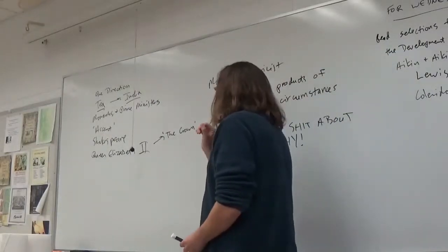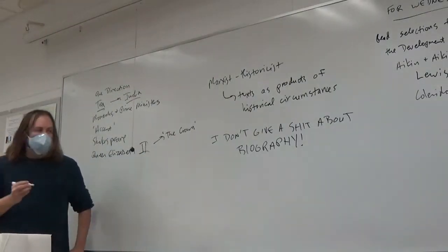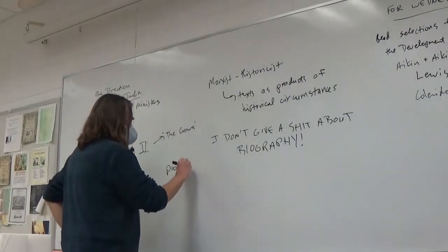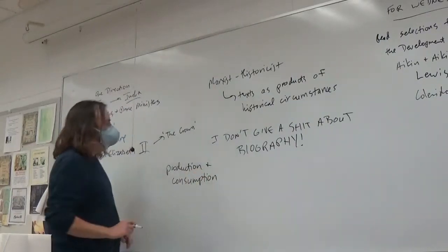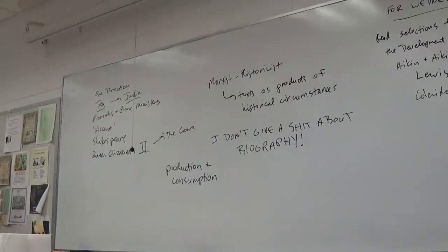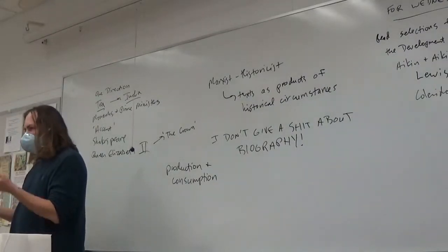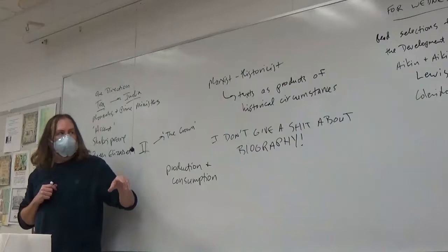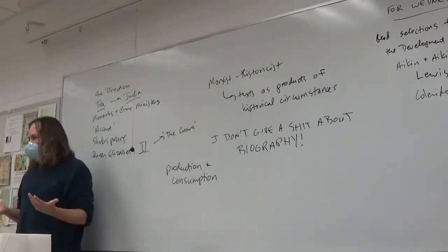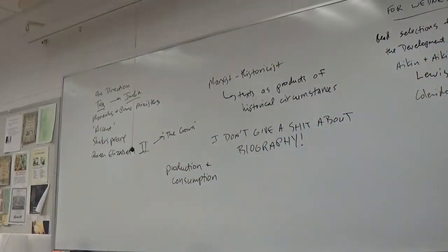We're also going to be talking about audience and about the production and consumption of texts. In what form are texts being circulated? How are people getting them? Are they getting a printed book? Are they getting pamphlets? Are they reading it in a newspaper or whatever? And who's doing the reading? Who is this text intended to reach? Who's actually reading it? And what are they making of it? These are things we're also going to be concerned with in this class.